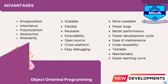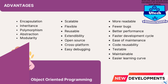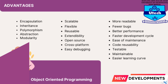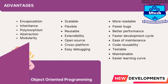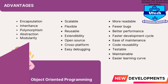Criticism of OOP: the object-oriented programming model has been criticized by developers for multiple reasons. The largest concern is that OOP overemphasizes the data component of software development and does not focus enough on computation or algorithms. Additionally, OOP code may be more complicated to write and take longer to compile. Alternative methods include functional programming — this includes languages such as Erlang and Scala, which are used for telecommunications and fault-tolerance systems.